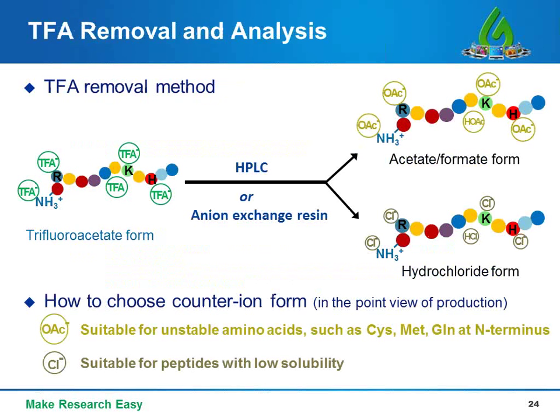TFA is the most common counter ion in custom peptides and can be toxic in cell culture assays. To avoid any potential risk of TFA in your experiments, TFA removal is an excellent choice, which exchanges toxic TFA form into non-toxic form, such as acetate, formate, or hydrochloride, either by reverse-phase HPLC or anion exchange resins before lyophilization. Since we provide more than one type of non-toxic counter ion, how can you decide which one to choose?